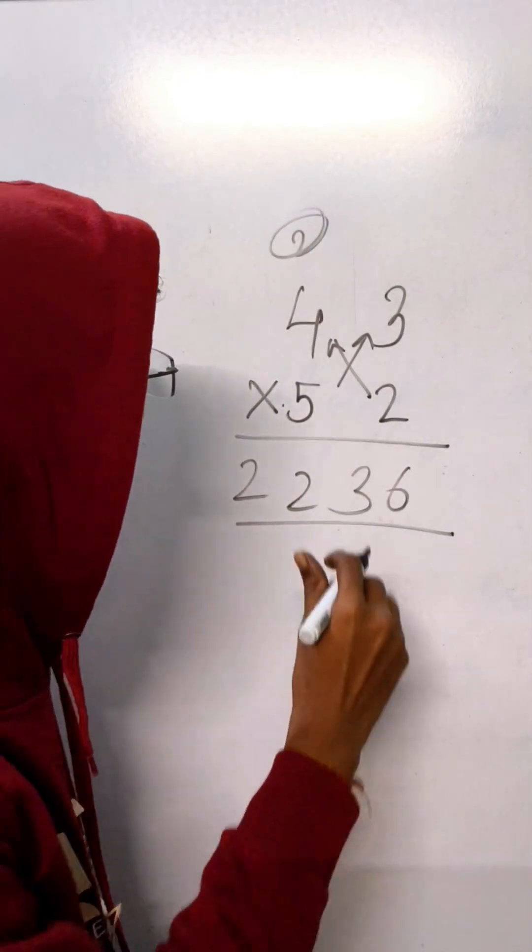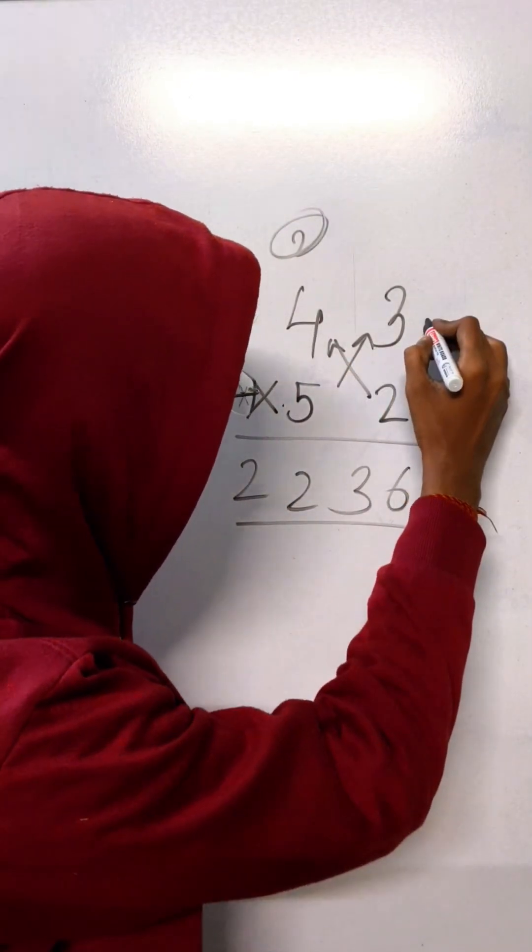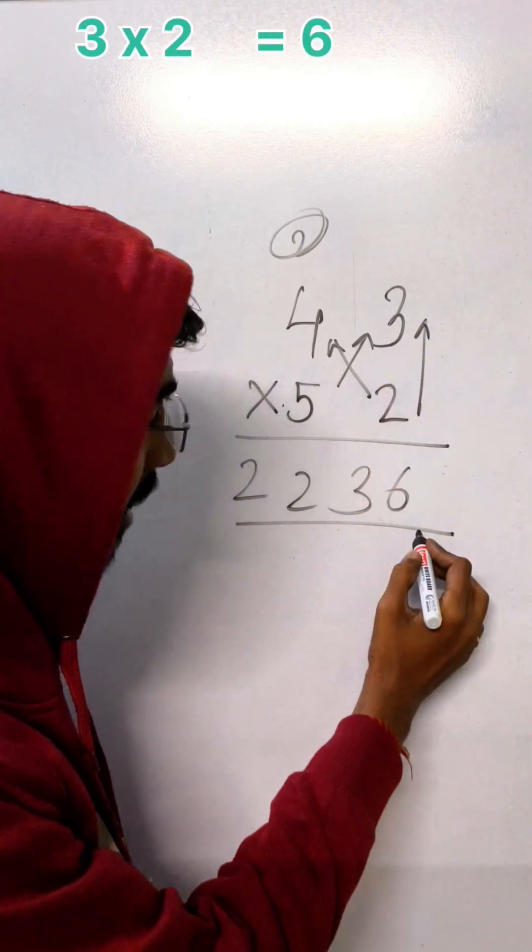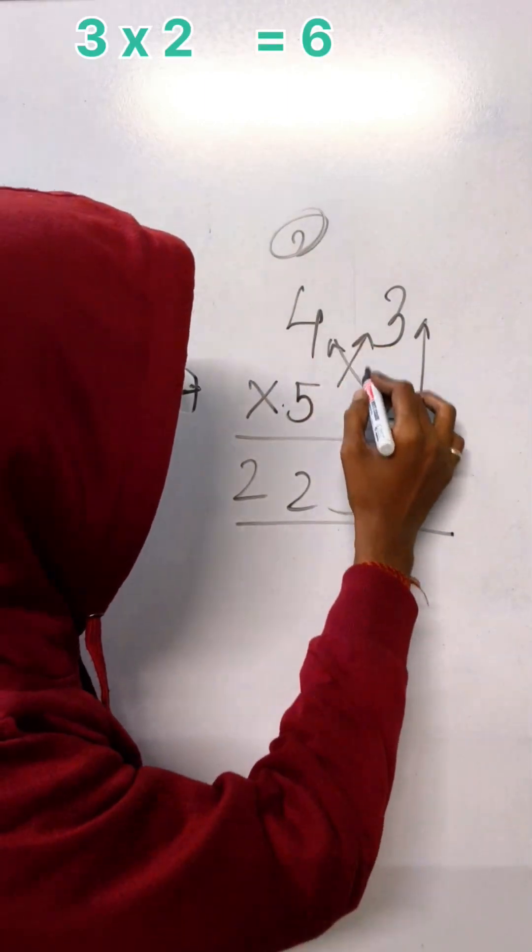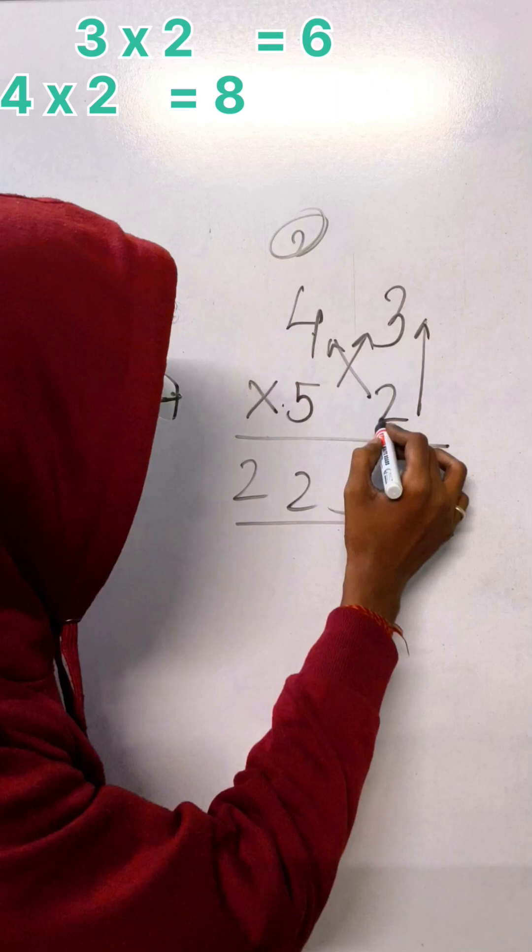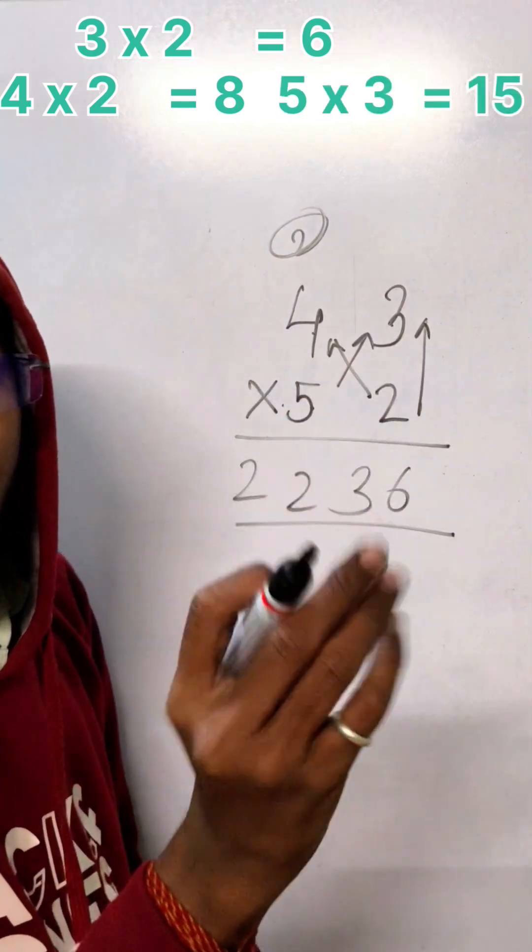Got it? So what we have to do is first we have to multiply these 2 numbers and write the answer. Then we have to multiply it diagonally. 4 2s are and 5 3s are. Add it.